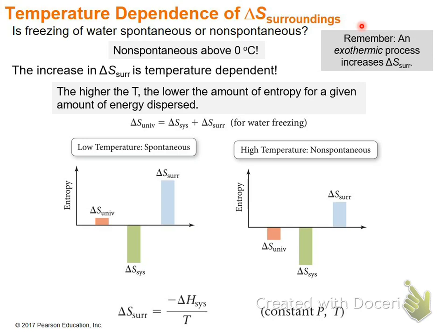We have a new equation for the surroundings: delta S of surroundings equals negative delta H of the system divided by temperature.